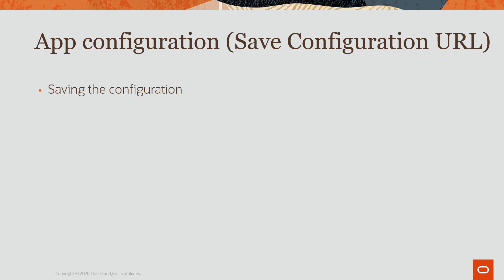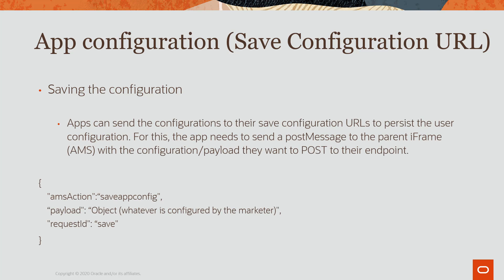Now for the save configuration URL. Apps must send the configurations to this endpoint to persist the user's configuration. For this, the app needs to send a PostMessage to the parent iframe with the configuration payload they want to post to their endpoint.